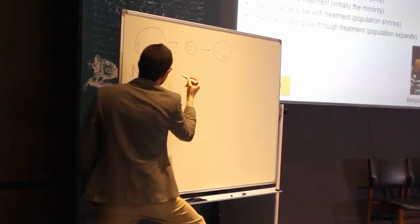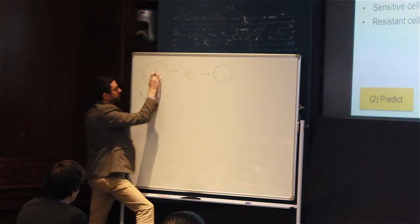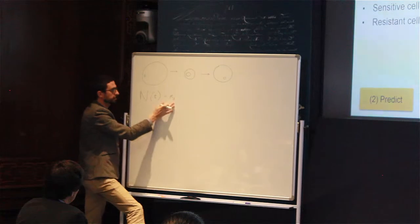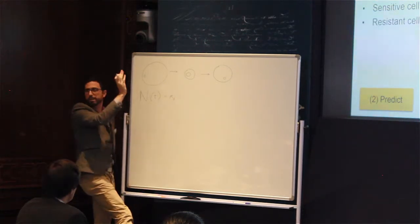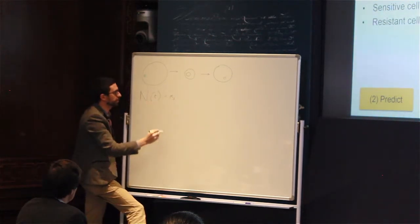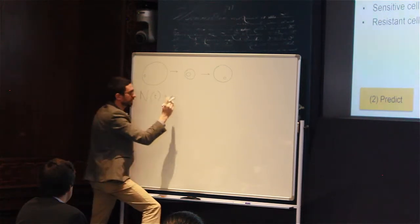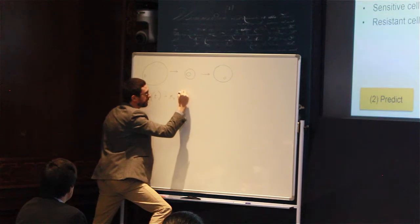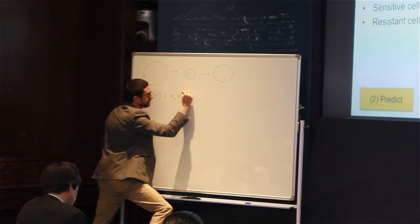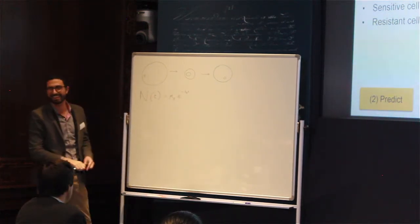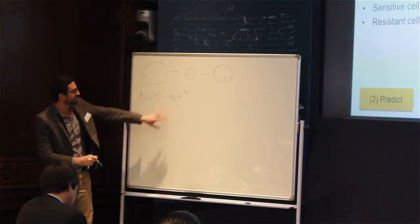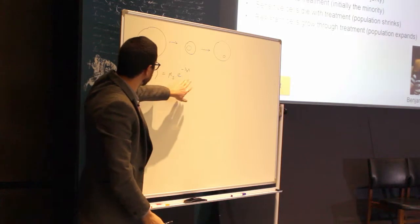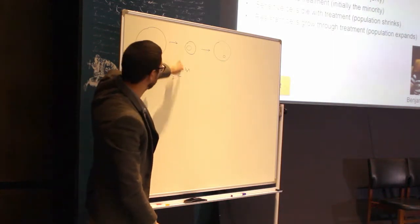We have in black the sensitive cells, which they start with a certain proportion, N_S. These are the majority. This could be 99% or 99.9%. And then this proportion changes over time according to, believe me, an exponential factor, e to the power of minus lambda s t. What does this mean?